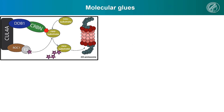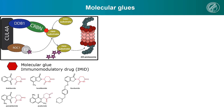When small molecules, referred to as molecular glues or immunomodulatory drugs, come into play, this situation changes. This class of molecules started with the development of thalidomide, the cause of the Contergan scandal, and its second and third generation analogues: lenalidomide, pomalidomide, avadomide, and iberdomide.